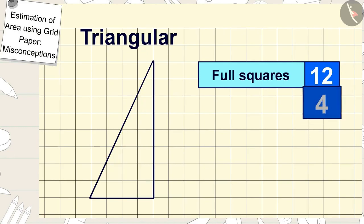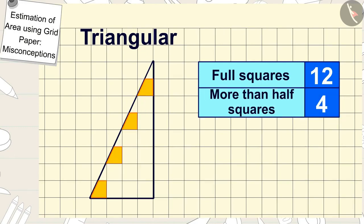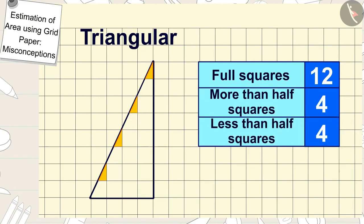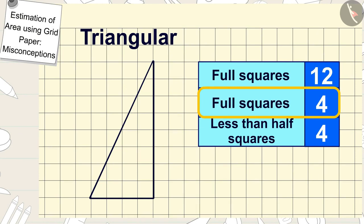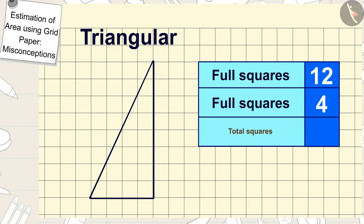There are twelve full squares in the area of the triangle shaped plate. There are four more than half squares and four less than half squares. So we will count four more than half squares as four full squares and we don't count the less than half squares.